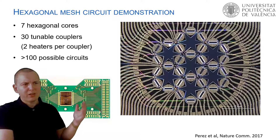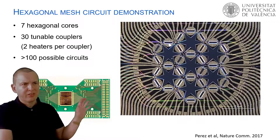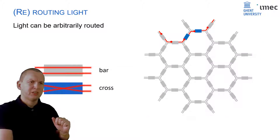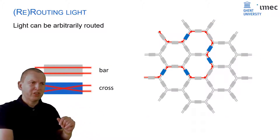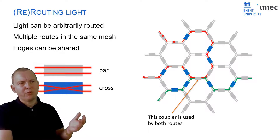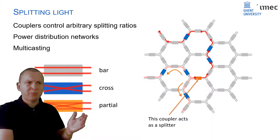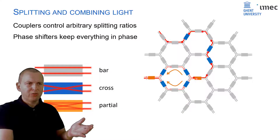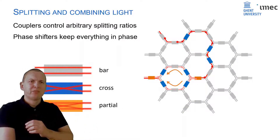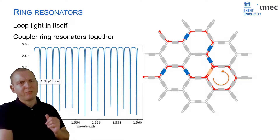The first demonstration of such a circuit was done in 2016-17 by the group of Jose Capmani at the Polytechnical University of Valencia. Already with seven hexagonal cells, you could perform more than a hundred functions: route light by changing couplers from cross to bar state — with single or multiple routes, even sharing couplers — send light along parallel paths, or cross two paths of light, which is typically difficult in a photonic circuit. Operating couplers in a partial state allows you to split light, do power distribution, and combine beams. Because light is a wave, you now have an interferometer, enabling wavelength-dependent filters — for instance, a Mach-Zehnder interferometer. Or you can loop light around in a ring to get sharp wavelength-dependent ring resonator filters.